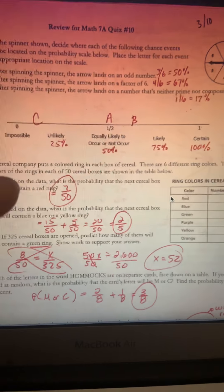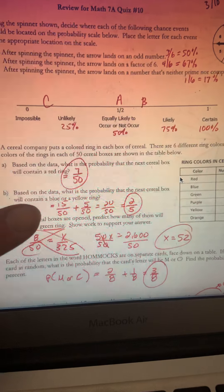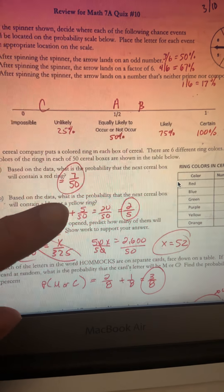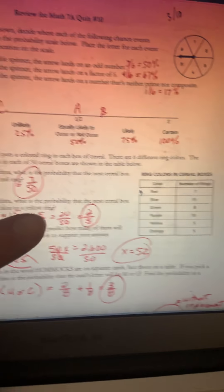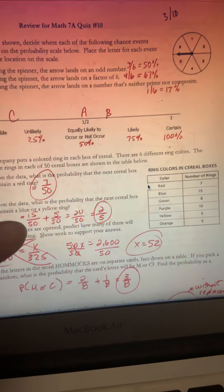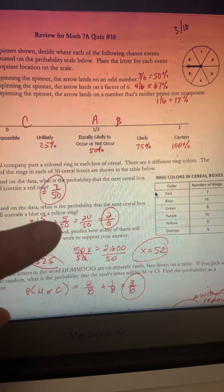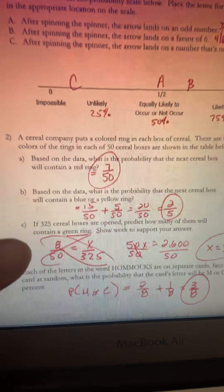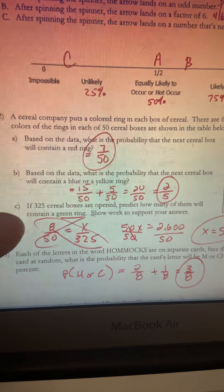The probability of blue or yellow: one thing we learned is that when it says 'or' we add the probabilities. Blue would be 15 out of 50, yellow is 5 out of 50. You add the probabilities together and then simplify. You will have a question or two about predictions on your assessment Friday.